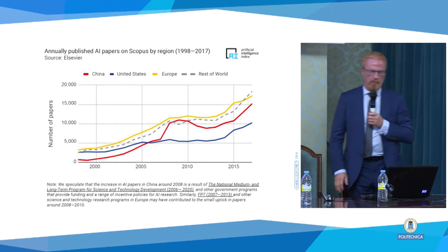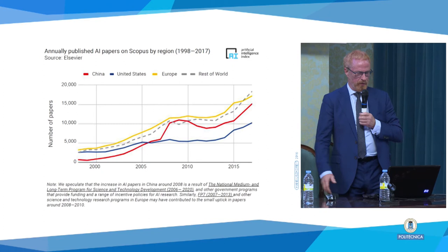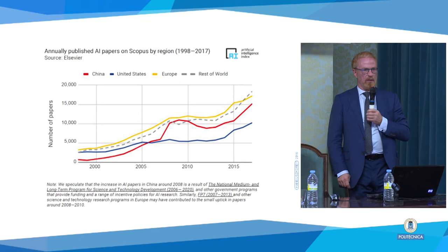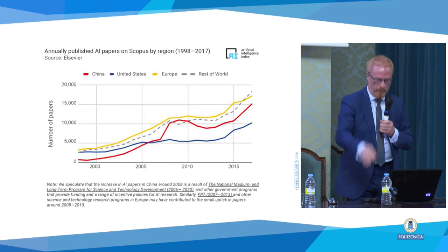When you look at papers — this data is already one and a half years old, published by the AI Index based on Elsevier data — Europe has more papers than China and the United States. That has been true for a while, but reality now looks not as nice. The new figures show it's reversing, but I'll show those later.